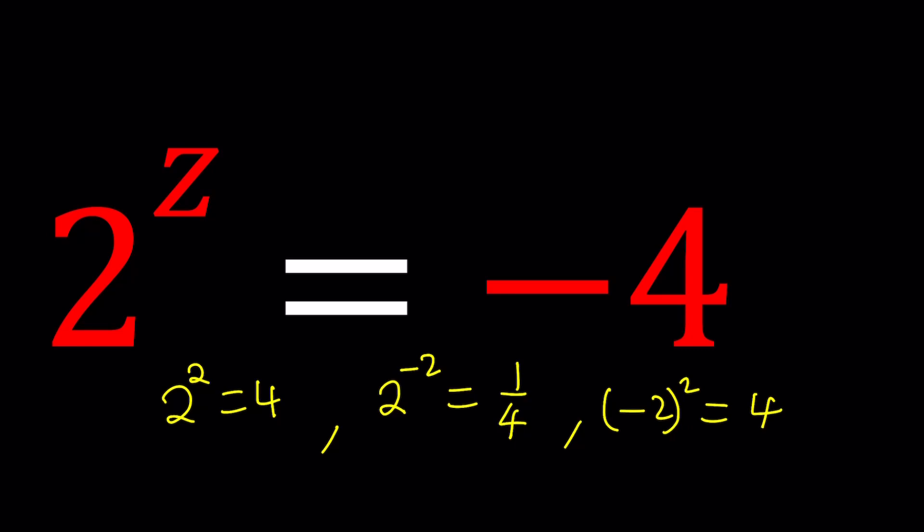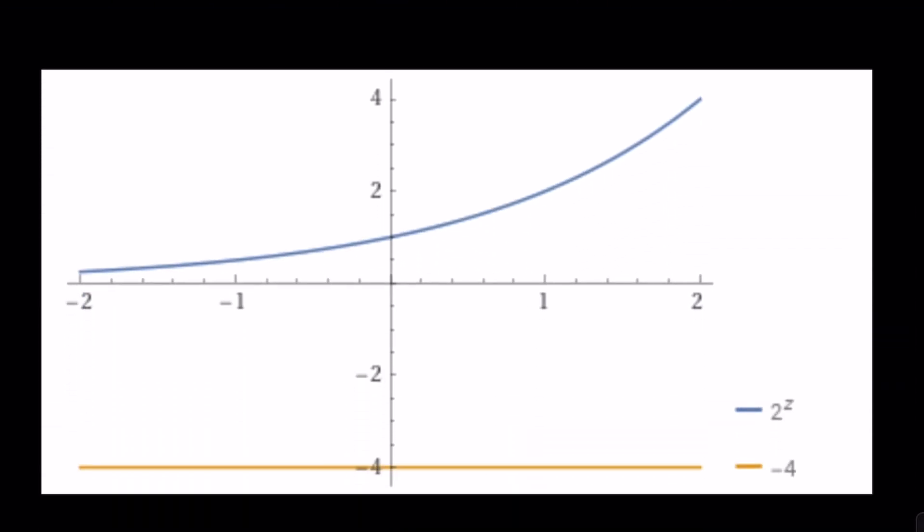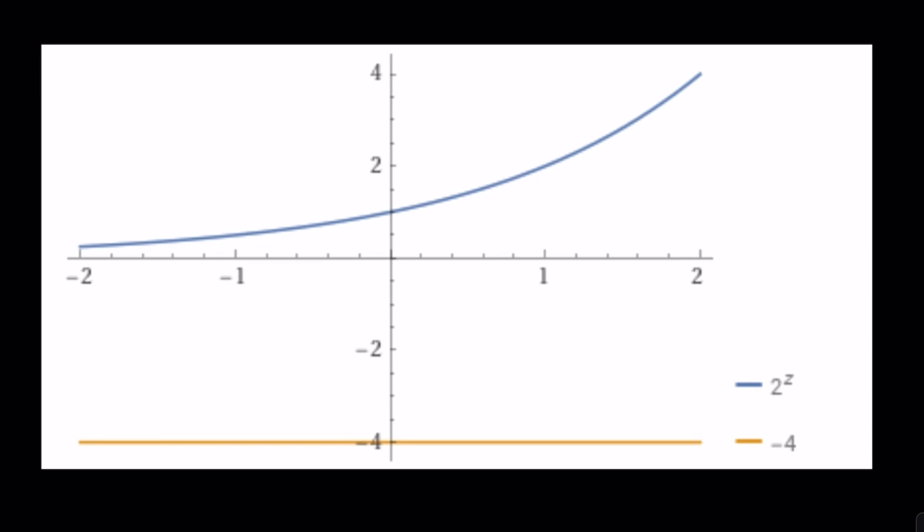In the real world if there was a solution then these two curves or graphs would intersect but they don't because there are no real solutions. Isn't that crazy? But with complex numbers everything is possible.